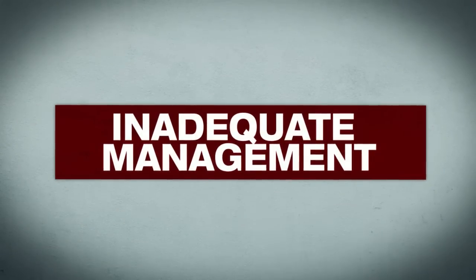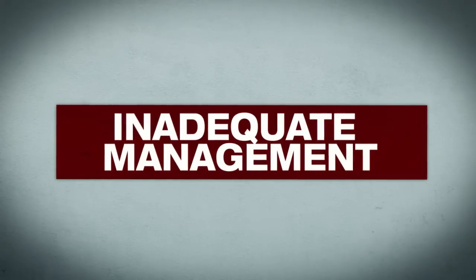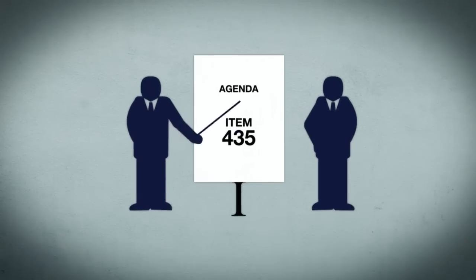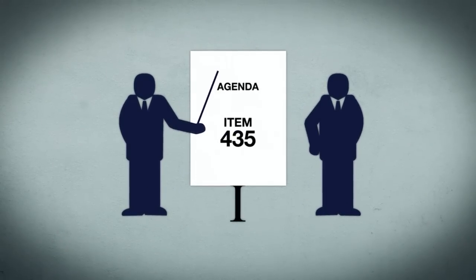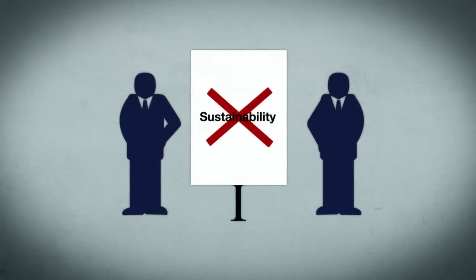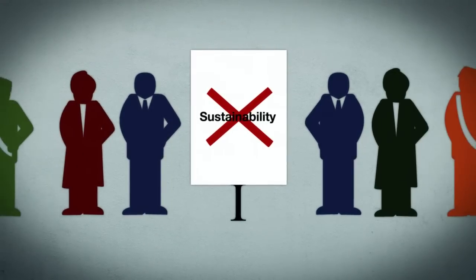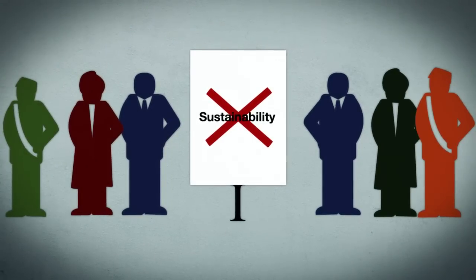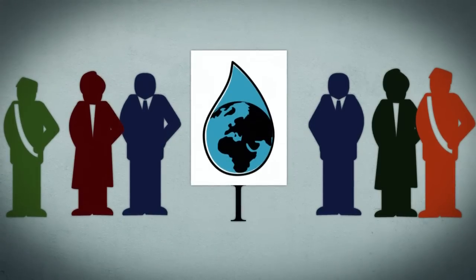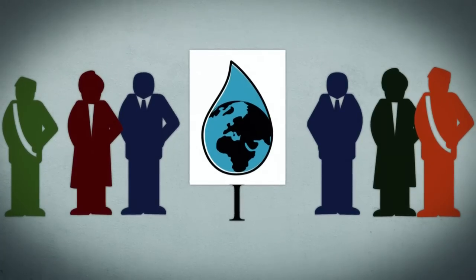Third, inadequate management. Problems in the water sector are rarely a political priority. At the national level, it is the lack of efficient, integrated, and sustainable water resources management. At the international level, there is often no effective instrument for cooperation to sustainably use water resources that cross borders.